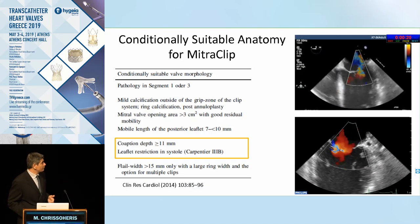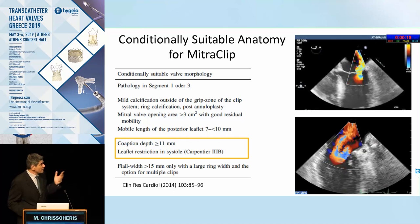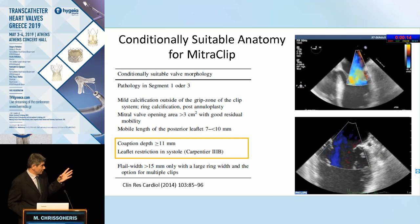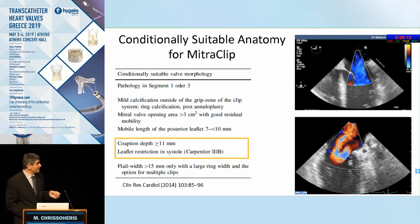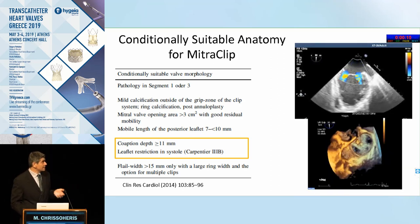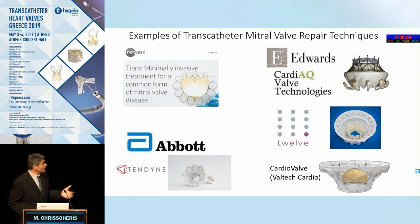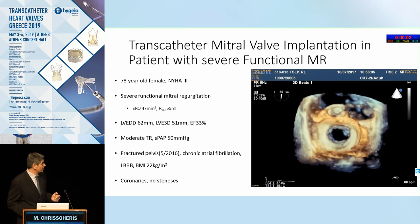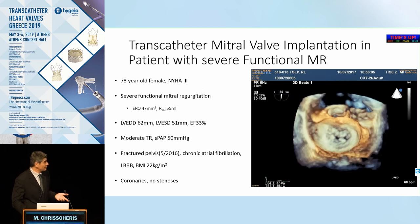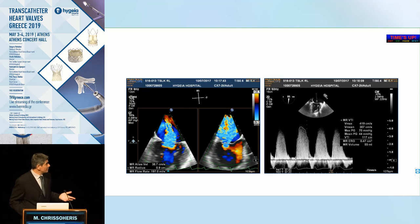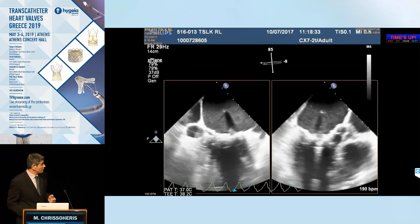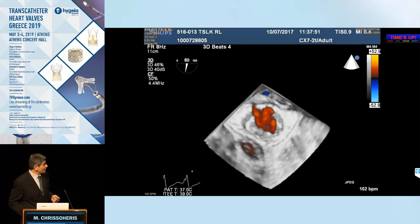Pascal is also available for functional mitral regurgitation. Functional regurgitation can be addressed even with multiple or very wide jets using multiple devices with excellent outcomes. In terms of replacement techniques, transcatheter mitral valve replacement is not yet in the CMARC trial and not readily available, but we have implanted the Medtronic Intrepid valve in a patient with severe functional MR and dilated cardiomyopathy with an excellent result.